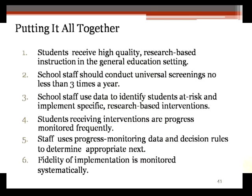School staff should be conducting universal screenings of both academics and behavior no less than three times a year to gauge student levels of proficiency. School staff should then use the data gathered through these screenings to implement scientific research-based interventions to address the needs of students who have been identified as at risk.